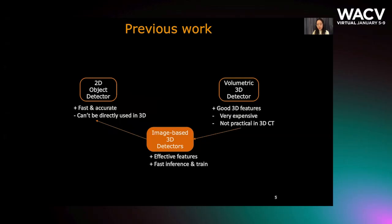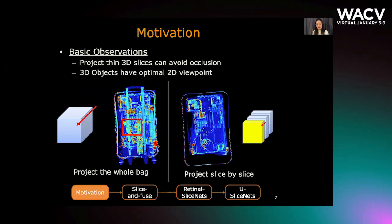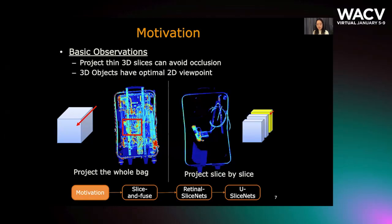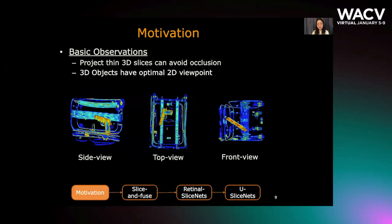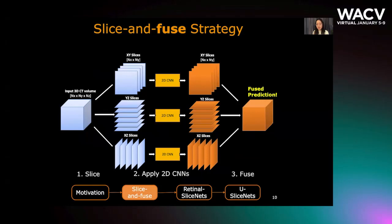In this work, we adapt image-based CNNs to a 3D detection framework, which is both effective and fast. Our solution is SliceNet, motivated by two observations. First, projecting thin 3D slices can avoid occlusion. Compared to projecting the whole bag to a highly cluttered 2D image, projecting each thin slice can reveal objects layer by layer. Second, 3D objects have an optimal 2D viewpoint — for example, a handgun is easiest to recognize from a side view. Following these motivations, we adapt a 3D framework using what we call the slice-and-view strategy.